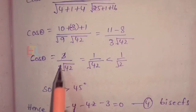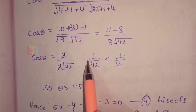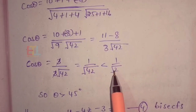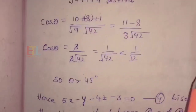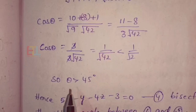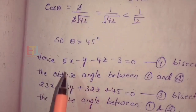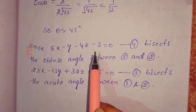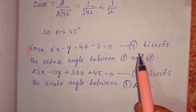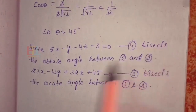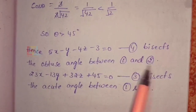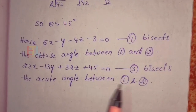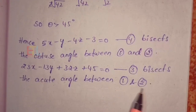Since cos theta equals 1 over root 42, which means theta is greater than 45 degrees. Hence equation 4 — that is 5x minus y minus 4z minus 3 equal to 0 — bisects the obtuse angle between planes 1 and 2. And equation 3 bisects the acute angle between the planes 1 and 2.